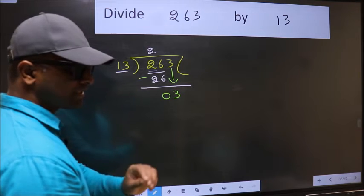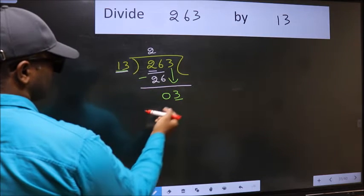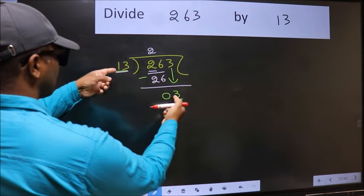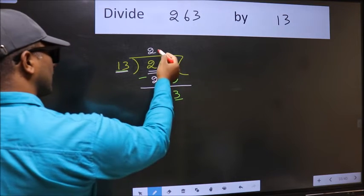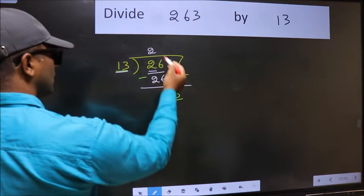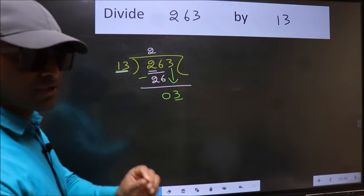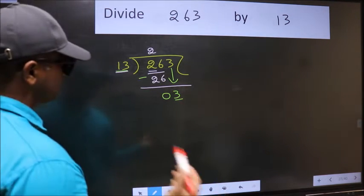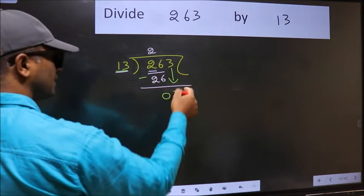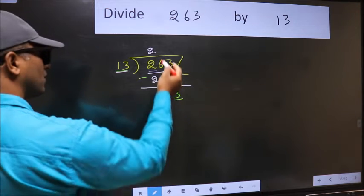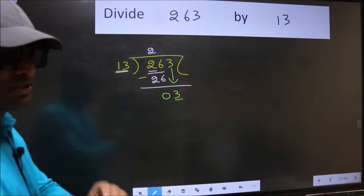And the mistake is this. Here we have 3 and here 13. 3 is smaller than 13. So what many do is they directly put dot, take 0, which is wrong. Why is it wrong? Because just now you brought this number down. And in the same step, you want to put dot and take 0.